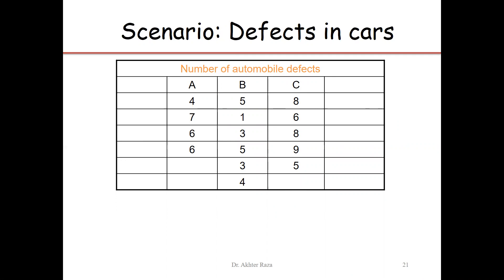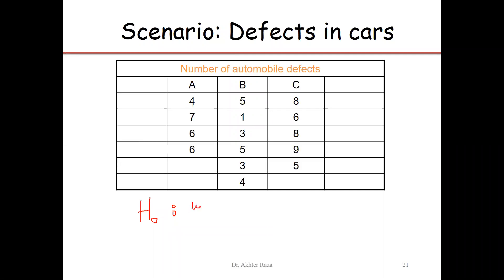H0 will be: the mean number of defects in these three types of car are the same. That is, the average number of defects in type A is the same as the average number of defects in type B, and the average number of defects in type C.